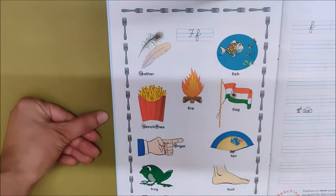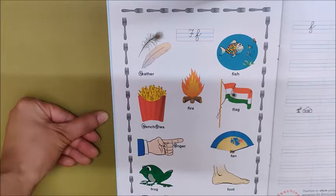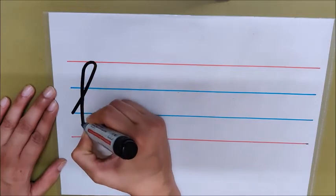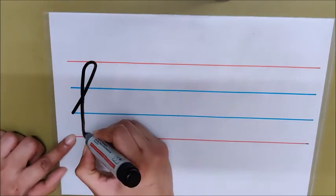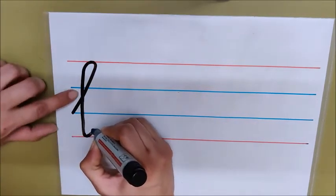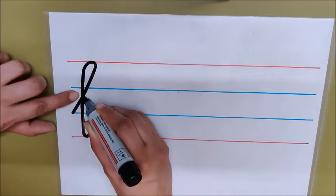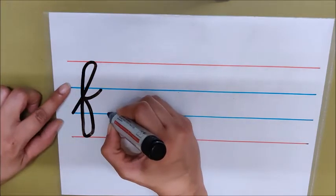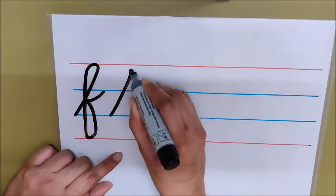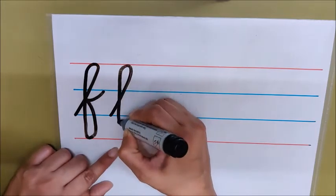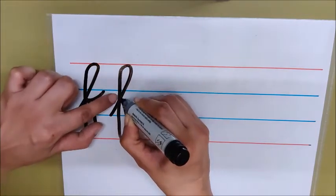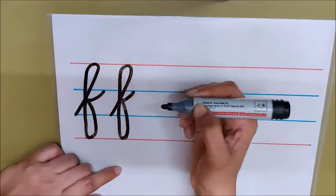Now, it's time to see the formation of letter F in lowercase cursive. Go up. Touch the red line. Go down. Bring it to the red line. Now, again go up. Can you see this point? Bring it till here. And then again up. Okay, we will see one more time. Go up. Touch the red line. Go down. Go up. Touch this point. And then again up.